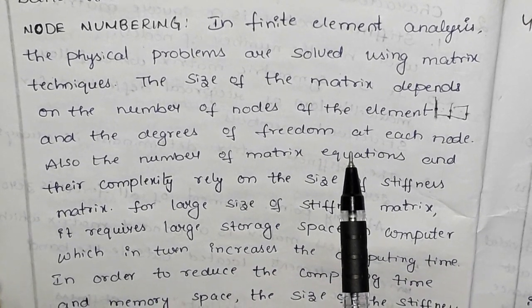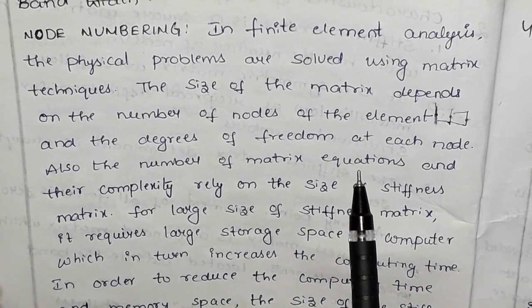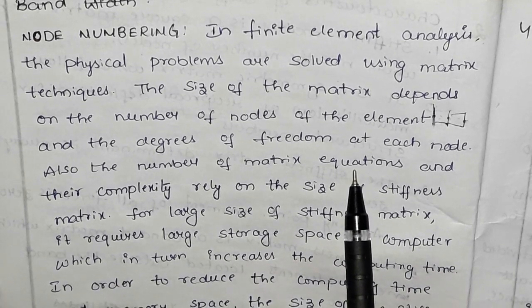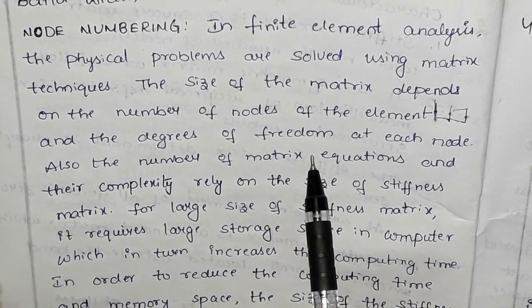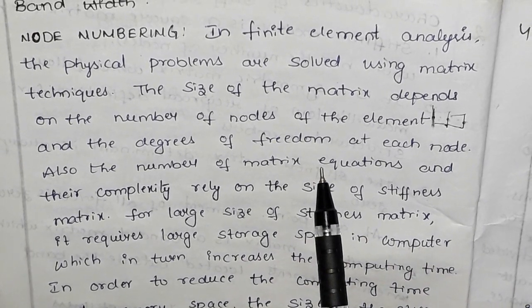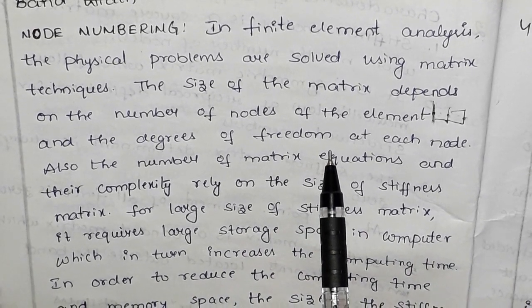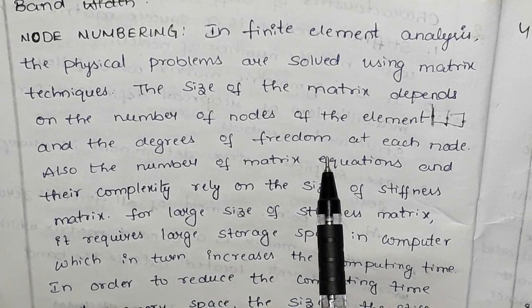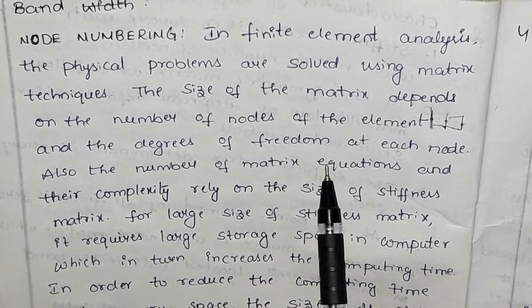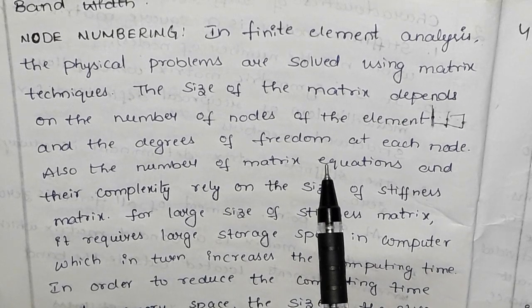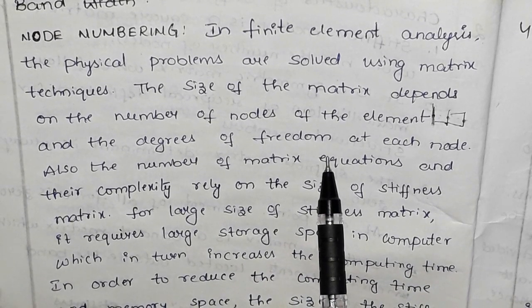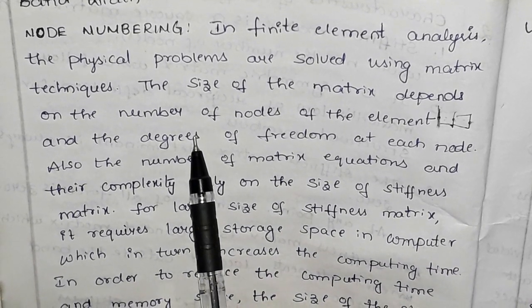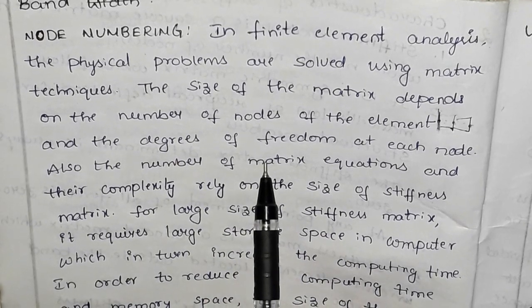In two domains, we have two degrees of freedom — along the x-direction and along the y-direction. For example, displacements from three nodes of a triangle along x and y give us three nodes into two degrees of freedom, resulting in a six-by-six stiffness matrix.